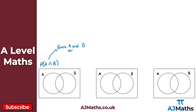So the intersection is represented by the region in the middle of the Venn diagram — we shade that central overlapping region. That would be the probability of A and B.